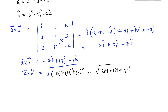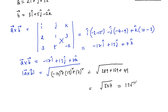The total sum is 289 plus 169 is 458, plus 49 is 507. So the answer is root of 507, which we can also write as 13 root 3. So mod of a cross b is 13 root 3.